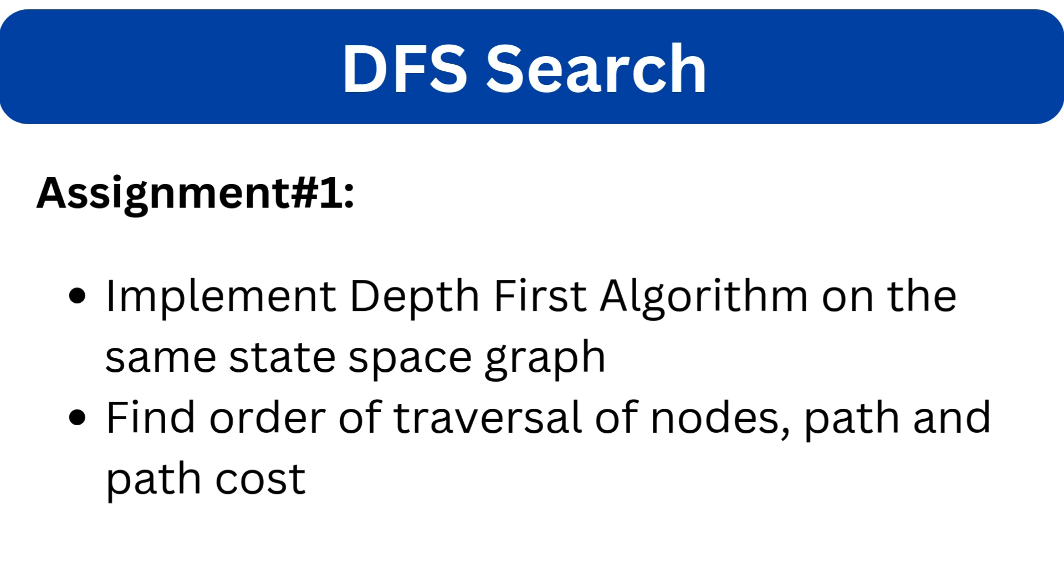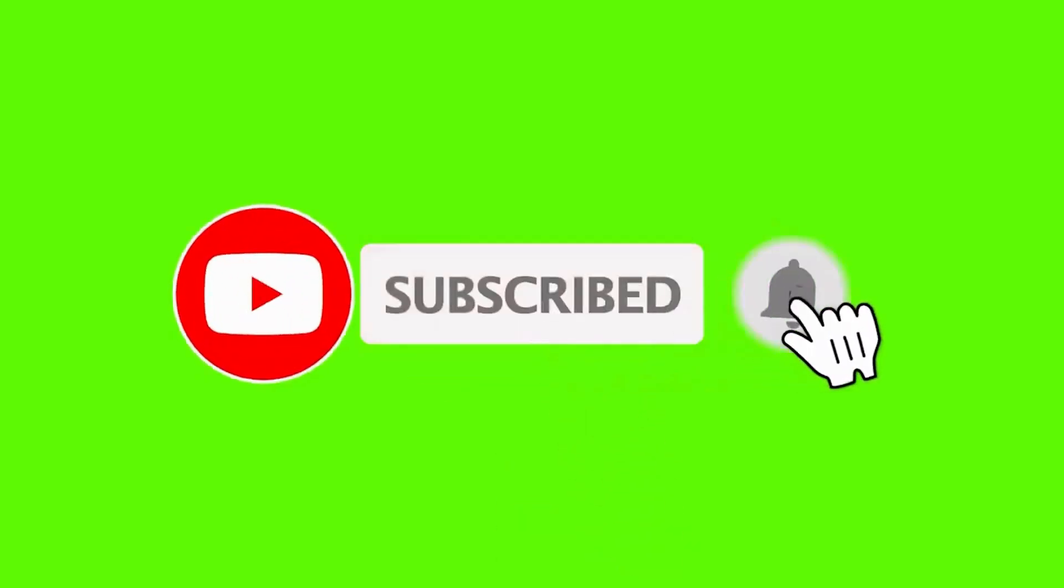I hope you enjoyed this class. Now we have an assignment for you. On the same graph that we created earlier, you have to apply the depth-first search algorithm on it. Find the order of traversal nodes, path and the path cost as well. If you found this video helpful, don't forget to like, share, and subscribe for more videos on data science and AI. See you next time.